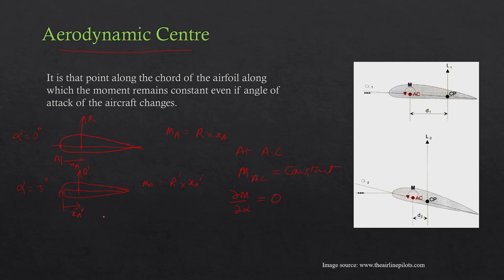If we non-dimensionalize it, we know that M = ½ρV²SC × CM. Since ½ρV²SC are all constant, we can say that ∂CM/∂α = 0 at the aerodynamic center. And since CL increases as angle of attack increases, this is equivalent to saying ∂CM/∂CL = 0. So these are the two mathematical equations which define the aerodynamic center: ∂CM/∂α = 0 and ∂CM/∂CL = 0. The aerodynamic center typically lies at c/4 (quarter chord) for subsonic airfoils and at c/2 for supersonic airfoils.